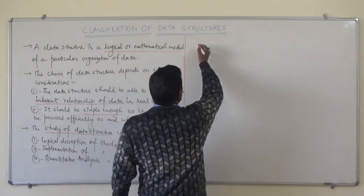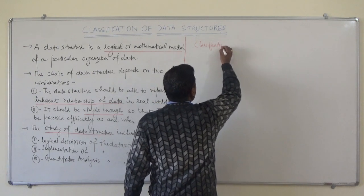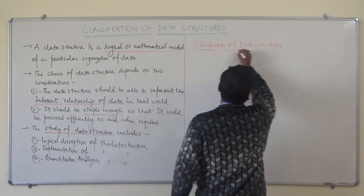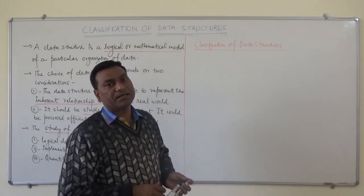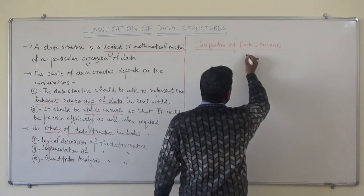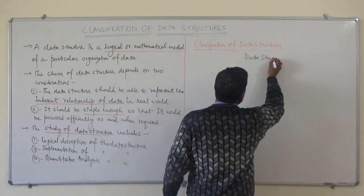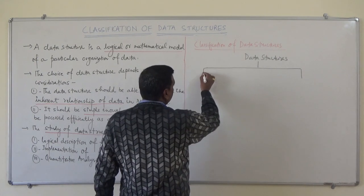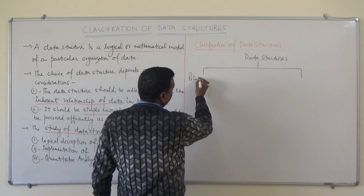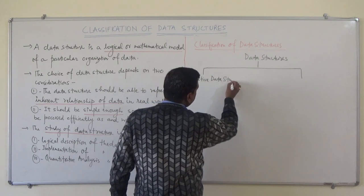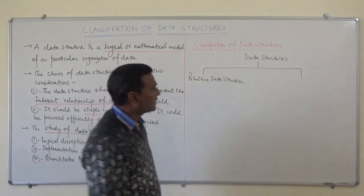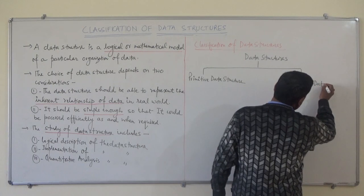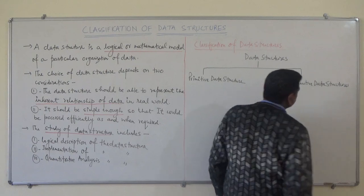Classification of data structures: the data structure can be classified basically into two categories. The first category is primitive data structure and the second category is non-primitive data structure.